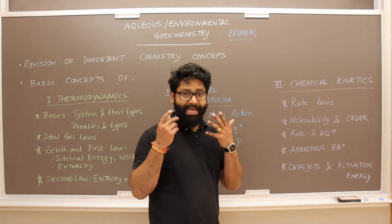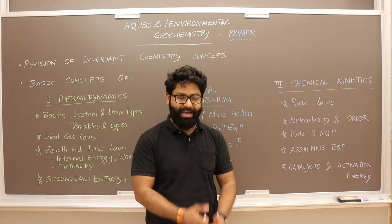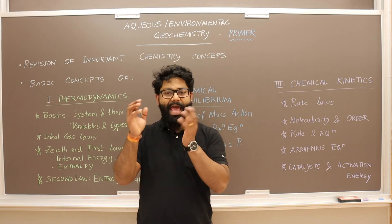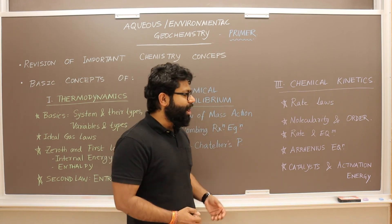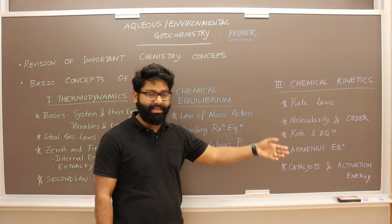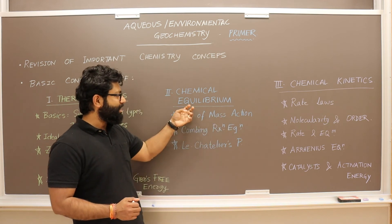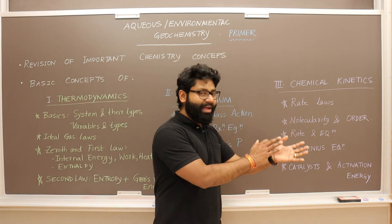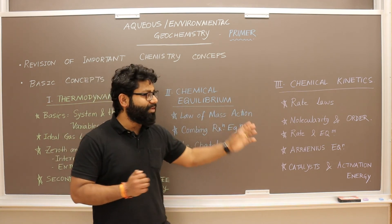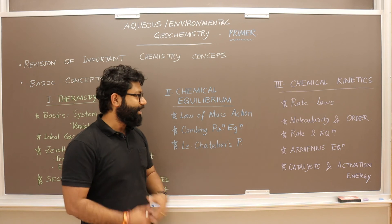Then we'll move on to chemical kinetics. We'll define rate laws for forward and backward reactions, and how the rate of a reaction is defined by the change in concentration of reactants and products. We'll combine the notion of chemical equilibrium with kinetics, since at chemical equilibrium the rate of the forward reaction equals the rate of the backward reaction — showing that chemical kinetics, chemical equilibrium, and thermodynamics are all related.